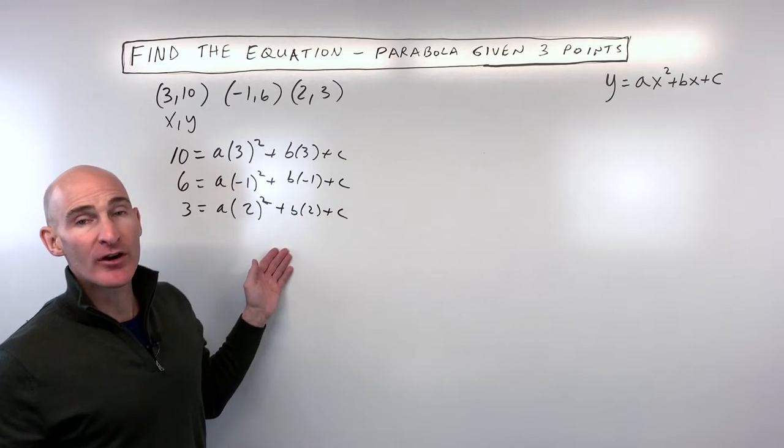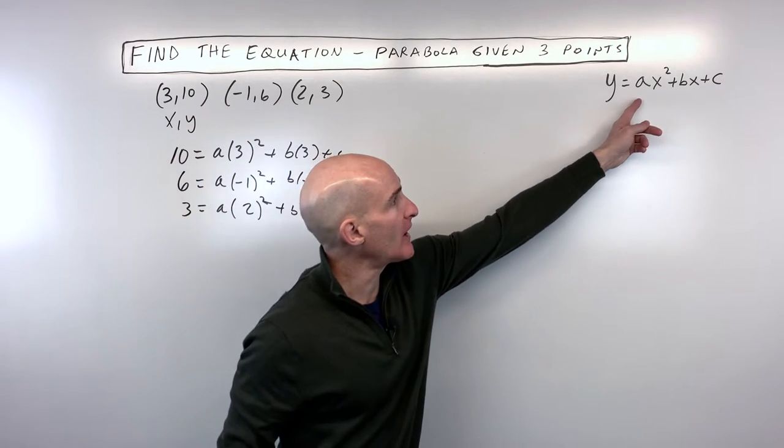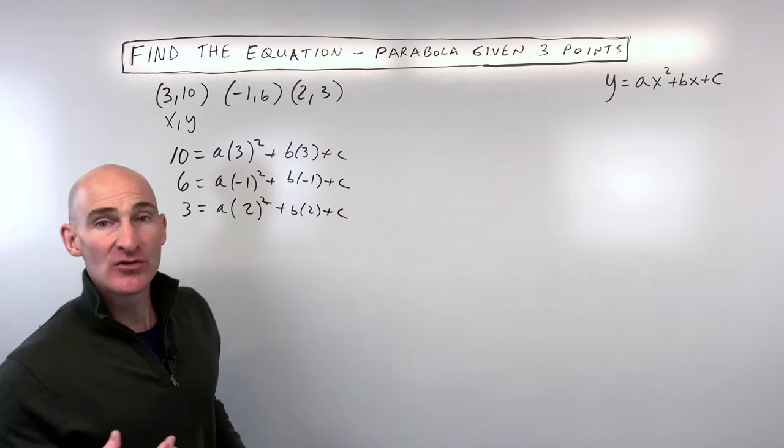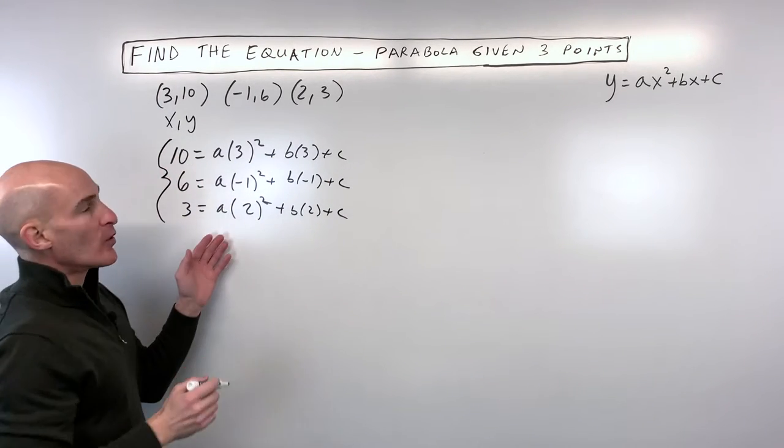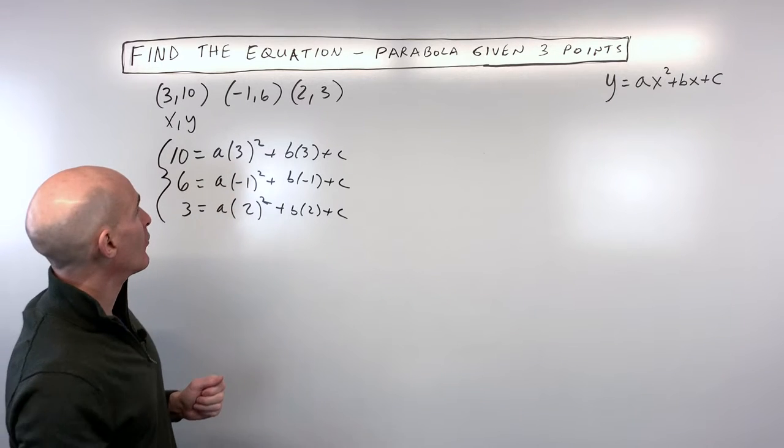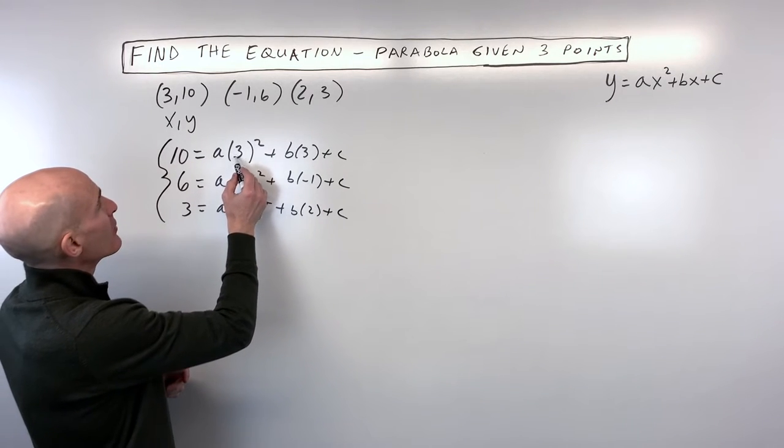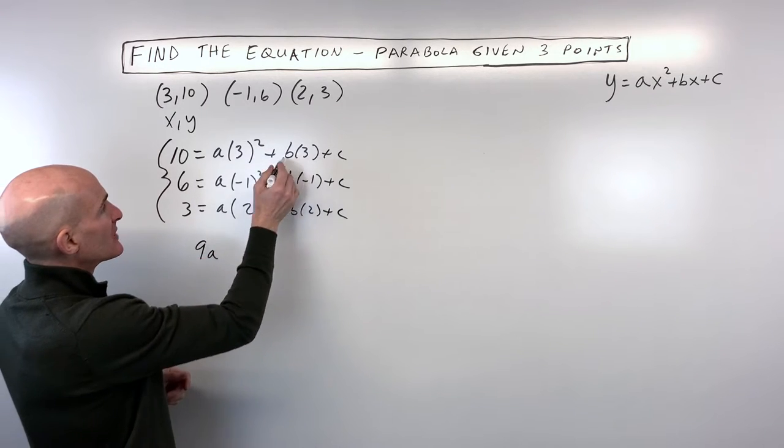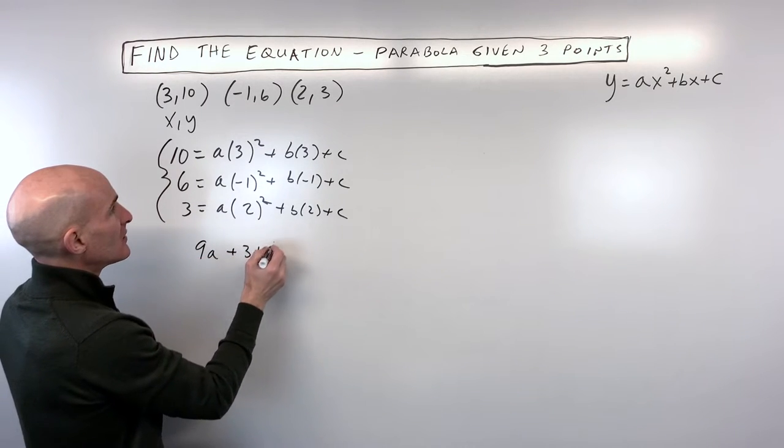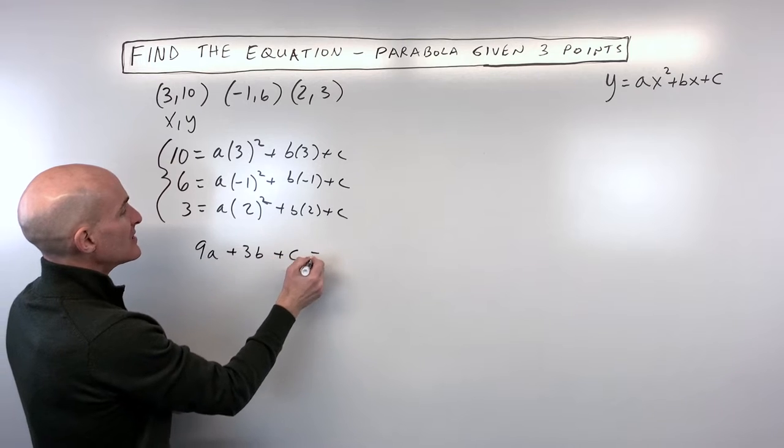Okay, so now we have our three variables, three equations, we're going to solve for our a, b, and c by using the elimination method. So the first thing I want to do is just simplify these equations a little bit to make them easier to work with. We've got 3 squared is 9 times a is 9a.